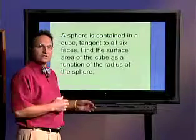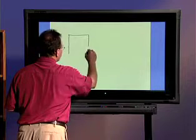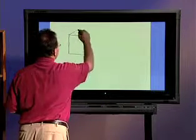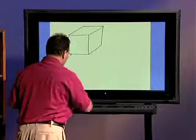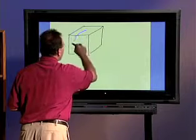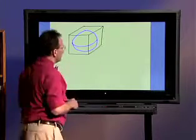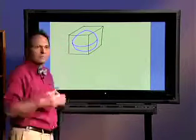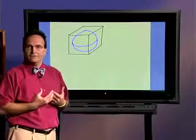So to start this problem we're going to draw a picture of the cube with the sphere inside of it tangent to all six faces. Now it's not real important that you're incredibly accurate with your drawing but as best you can to get an idea of what it is that we're going to be looking at. So here we have the cube and the sphere inside of it.